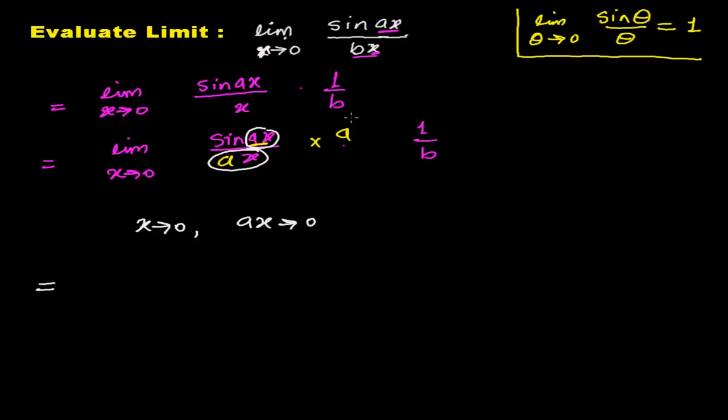Now I'm writing: I'm putting a and b as constants, so let me put a over b outside. Now I'm left with the limit. I already told you when x tends to 0, ax tends to 0. So I'm now writing ax tends to 0, and now sin(ax) over ax.